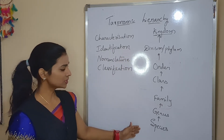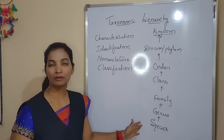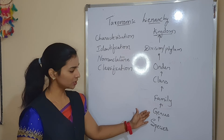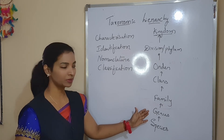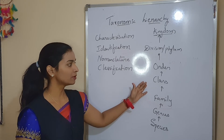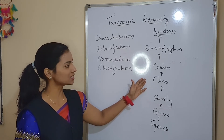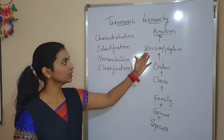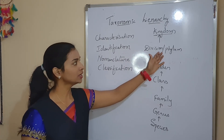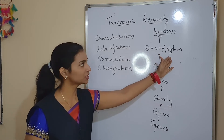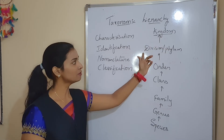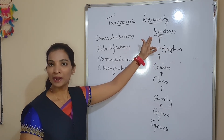This is an ascending order of arrangement of taxonomic categories. Species group together to form a genus, genera together form a family, families form an order, and group of orders — in the case of plants — is considered a division, or in the case of animals, a phylum. Group of phyla comes under the animal kingdom, and group of divisions comes under the plant kingdom.